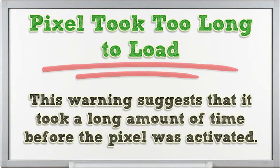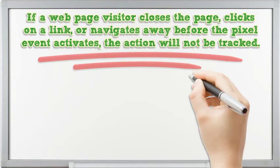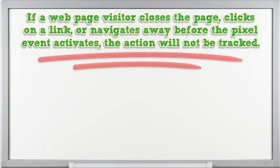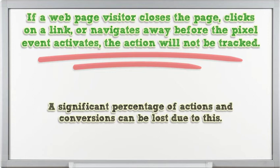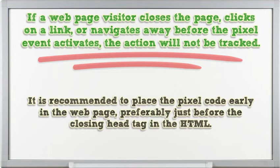This warning suggests that it took a long amount of time before the Pixel was activated. This may be due to where the Pixel is located on the page. If a web page visitor closes the page, clicks on a link, or navigates away before the Pixel event activates, the action will not be tracked — a significant percentage of actions and conversions can be lost due to this. It is recommended to place the Pixel code early in the web page, preferably just before the closing head tag in HTML.